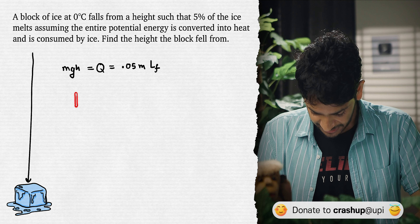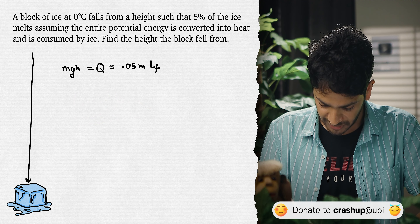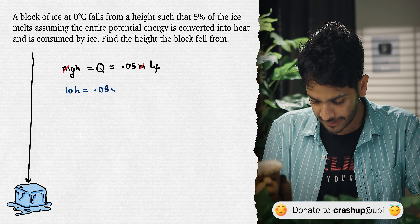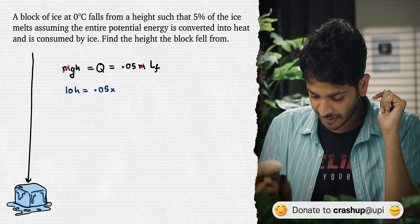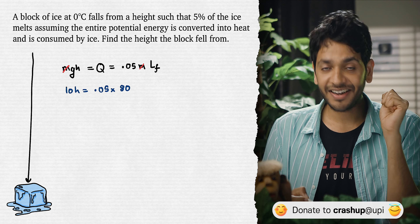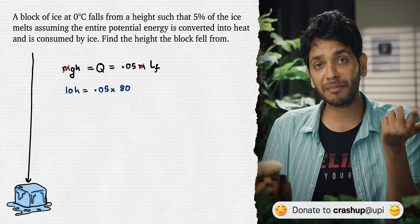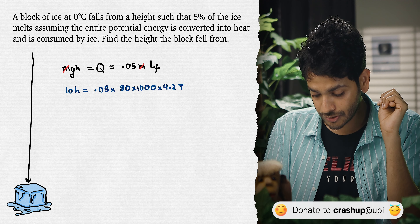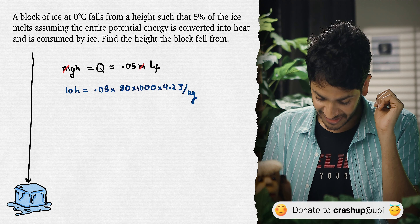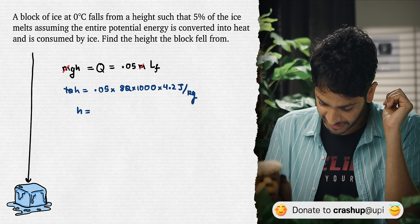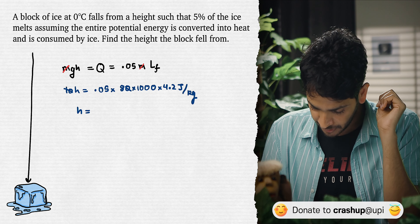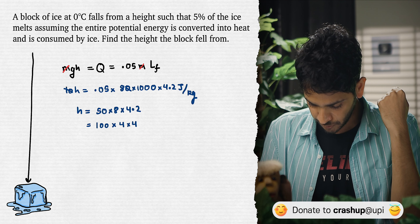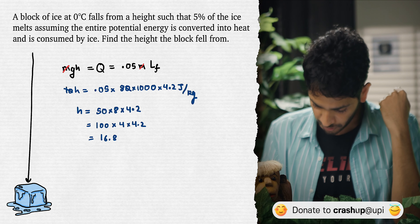The answer is approximately 1.68 km. Substituting values: mass cancels, G = 10. Latent heat of fusion = 80 calorie per gram. Converting to SI: 80 × 1000 calorie/kg, then × 4.2 Joule/calorie = 336,000 J/kg. So H = 0.05 × 336,000 / 10 = 50 × 8 × 4.2 = 100 × 4 × 4.2 = 1680 meters = 1.68 km.